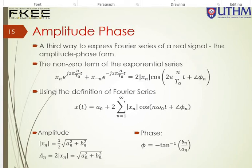Hello everyone. Today I would like to teach you on the third type of Fourier series, that is the amplitude-phase Fourier series. On top of the second type — the trigonometric Fourier series — as you know, you need to find a₀, aₙ, and bₙ. In the amplitude-phase form it is easier, but you still need to find a₀, aₙ, and bₙ first before you can find the amplitude and phase.